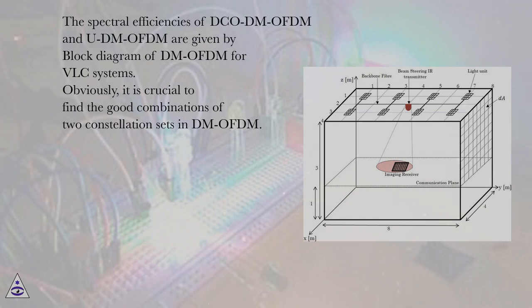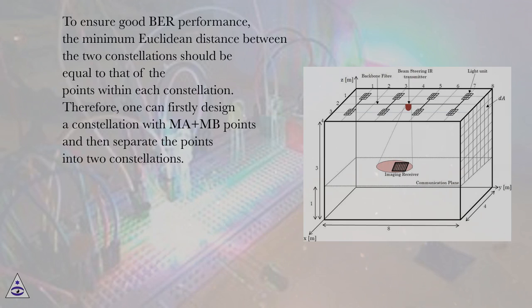Obviously, it is crucial to find the good combinations of two constellation sets in DM-OFDM. To ensure good BER performance, the minimum Euclidean distance between the two constellations should be equal to that of the points within each constellation.